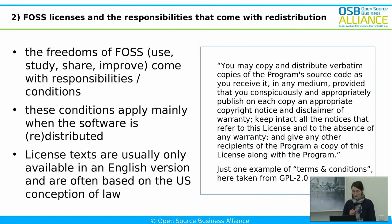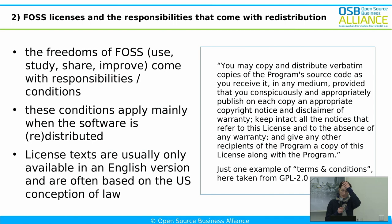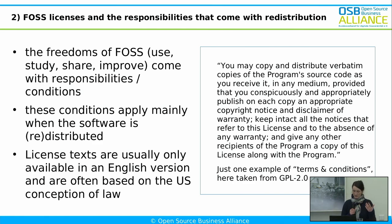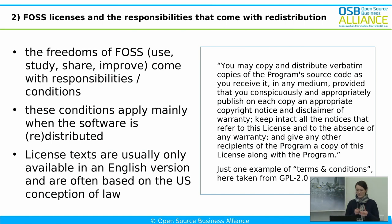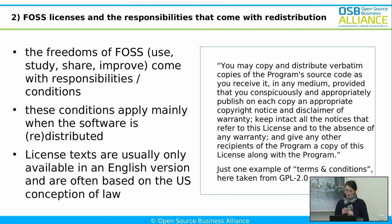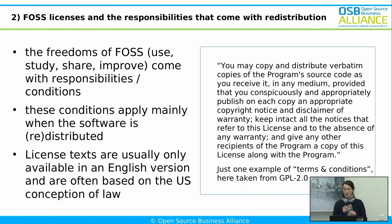Now we're going to look at the second problem area. Open source software comes with great freedoms — the freedoms to use, study, share and improve the software. You have the right to use the software as is and you don't have to do anything. But when you want to redistribute the software, there are certain conditions that you have to comply with. For example, from the GNU Public License version two: you may copy and distribute verbatim copies of the program's source code, provided that you conspicuously and appropriately publish on each copy an appropriate copyright notice and disclaimer of warranty, keep intact all the notices that refer to this license and to the absence of any warranty, and give any other recipients of the program a copy of this license along with the program.